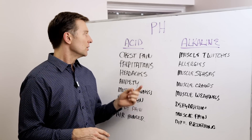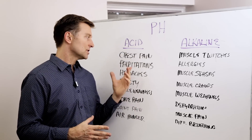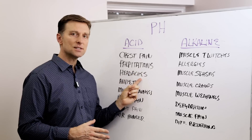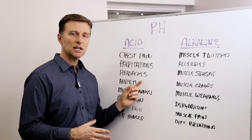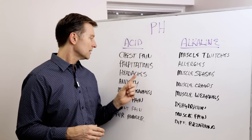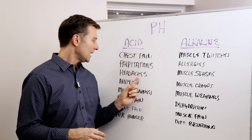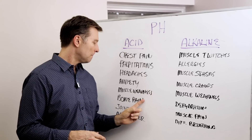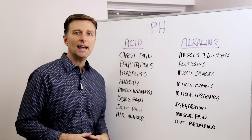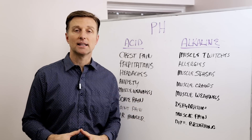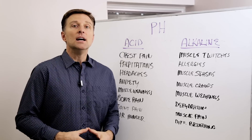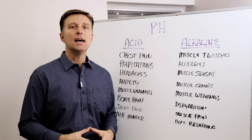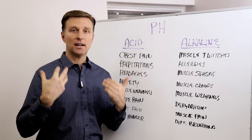So if you're too acid, you could possibly have chest pain, palpitations — because it affects the electrolyte mix — headaches, anxiety, muscle weakness, bone pain, joint pain, and air hunger, like you can't get enough air.